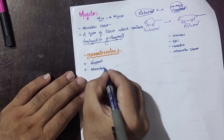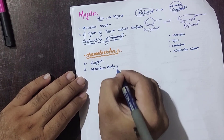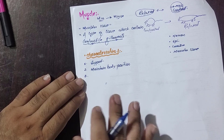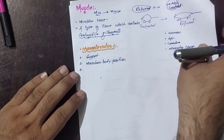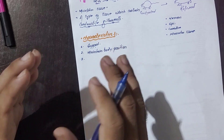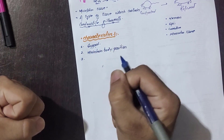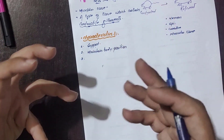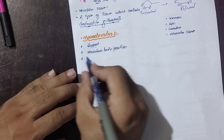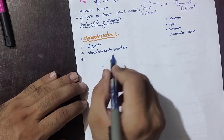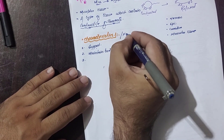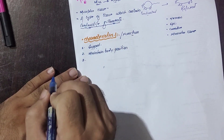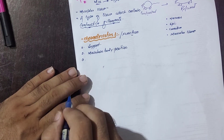The second characteristic or function of muscles is to maintain body position. Our bones and body organs are maintained in their correct positions with the help of muscles. When we want to stand erect or sit down, muscles help us do that. So support and maintaining body position are key functions of muscles.